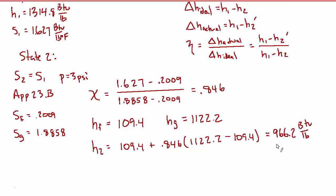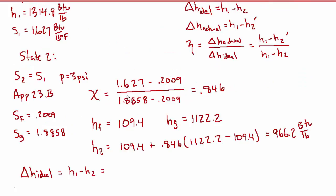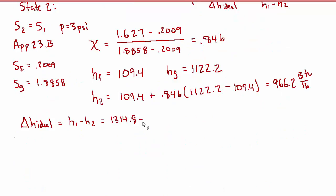If the expansion in the turbine were isentropic, the enthalpy at state 2 would be this. Delta h ideal equals h1 minus h2, which is 1314.8 minus 966.2, so delta h ideal is 348.6 BTU per pound.